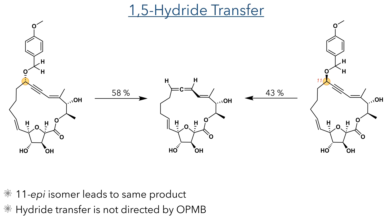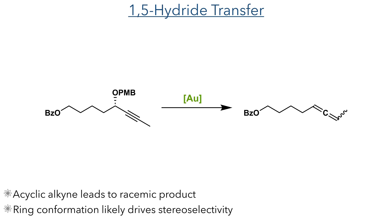This stereoselectivity is quite remarkable, and the researchers investigated whether this was due to the stereochemistry of the PMB group. To this end, they carried out the synthesis using the 11-epi isomer and performed the hydride transfer reaction as before. Surprisingly, this epimer also generated archanguamide with the correct stereochemistry. This suggests that the rigidity of the macrocyclic ring drives the production of this isomer, as the opposite stereochemistry at the allene is likely too conformationally constrained. To confirm this hypothesis, they carried out a 1,5-hydride transfer on a chiral but acyclic intermediate, and found that in this case it led to a racemic product. This confirms that it is not the stereochemistry of the PMB group, but the ring conformation that drives the selectivity.